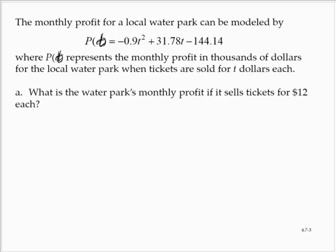The monthly profit for a local water park can be modeled by P(t) = -0.9t² + 31.78t - 144.14, where P(t) represents the monthly profit in thousands of dollars for the local water park when tickets are sold for t dollars each. Part A: what is the water park's monthly profit if it sells tickets for $12 each?